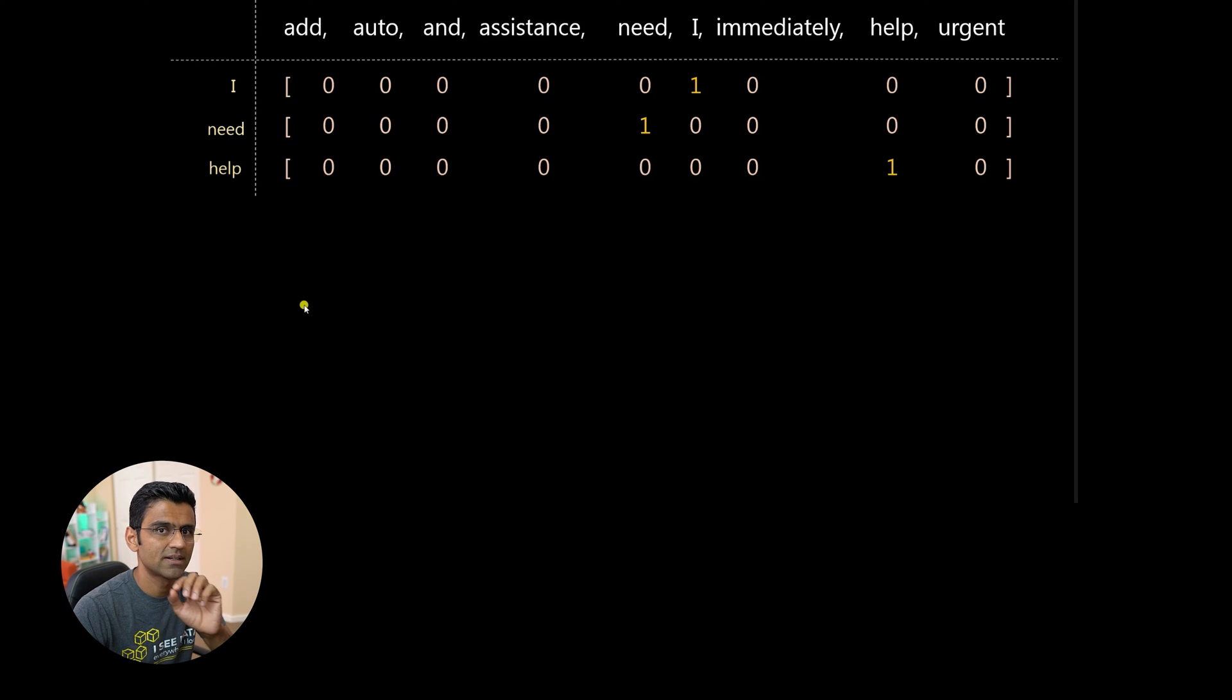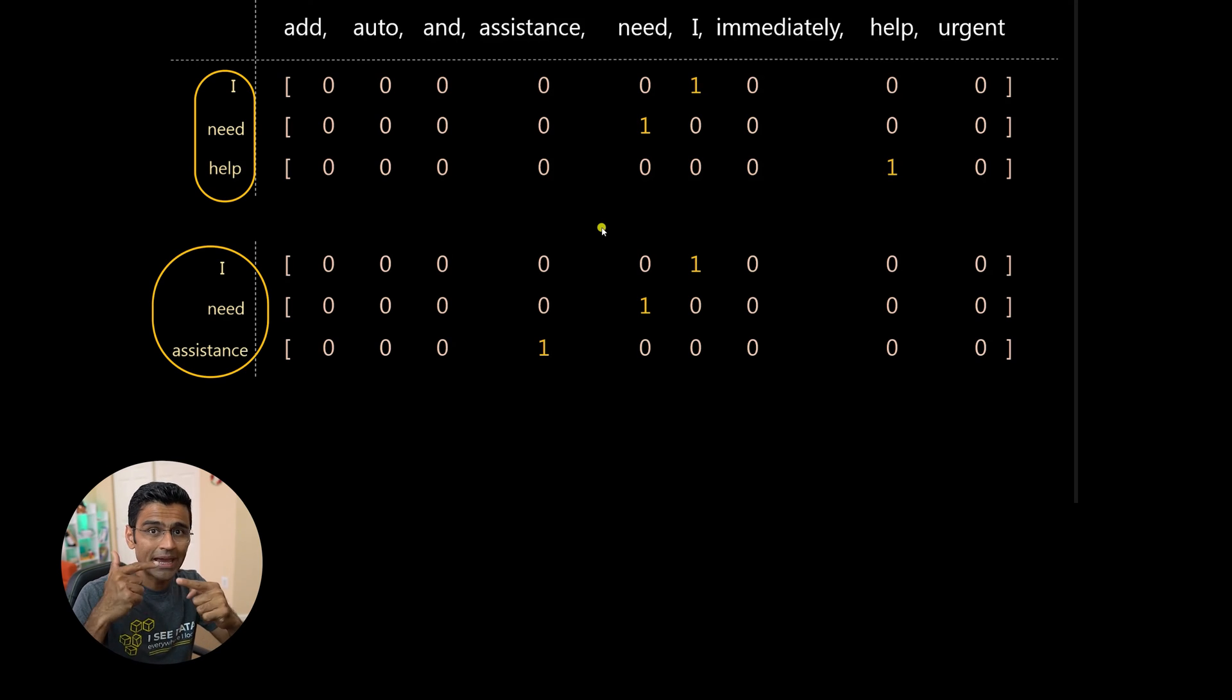Let's say I have a sentence called I need help. And this is my one hot encoded vector. Let's say I train my model. And then for prediction, I get a sentence like I need assistance. Now help and assistance are kind of similar word.